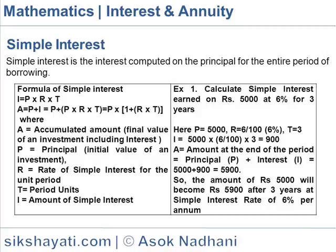Calculate Simple Interest earned on Rs.5000 at 6% for 3 years. Here P = 5000, R = 6/100 = 6%, T = 3. So I = 5000 × (6/100) × 3 = 900.